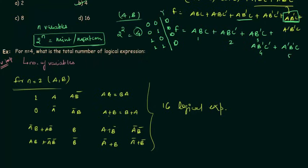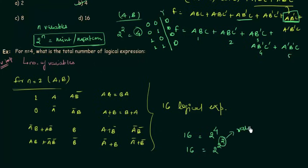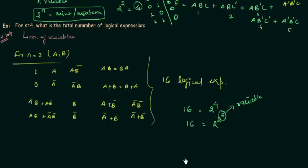Let's generalize. We have 16 for two variables, which is 2 to the power 4, and 4 equals 2 squared — so 16 equals 2 to the power 2 to the power 2. In general, if we have n variables, the total number of logical expressions is 2 to the power 2 to the power n.